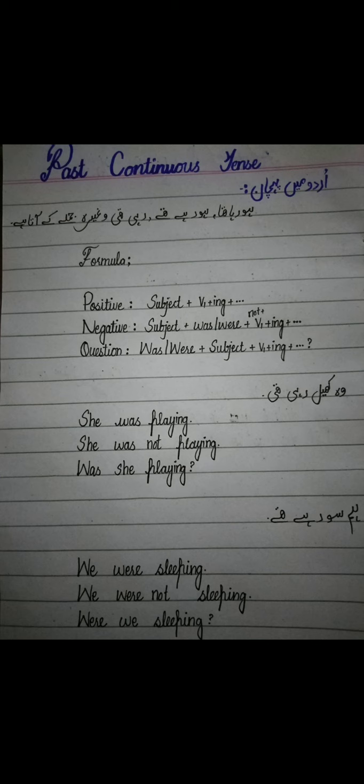Example: 'وہ کھیل رہی تھی' — رہی تھی سے یہ past continuous sentence ہے۔ Positive میں: She was playing. Negative میں: She was not playing — وہ کھیل نہیں رہی تھی۔ Question میں: was کو sentence کے start میں لائیں گے — Was she playing? کیا وہ کھیل رہی تھی؟